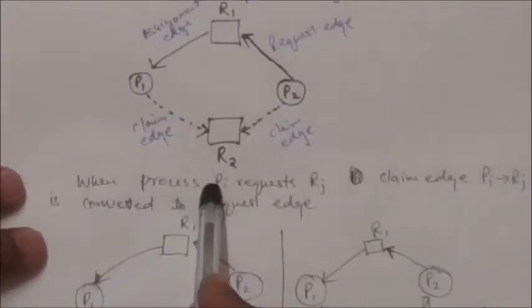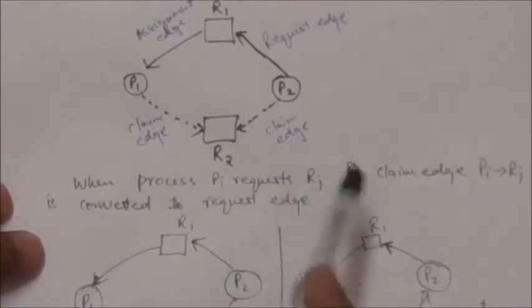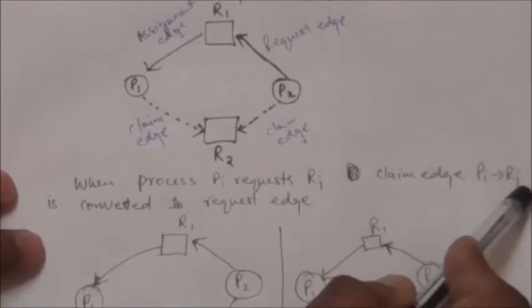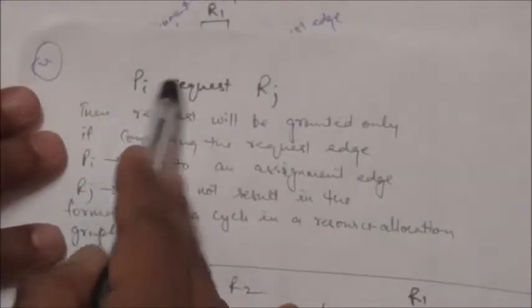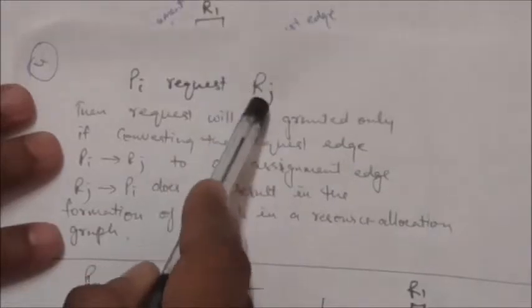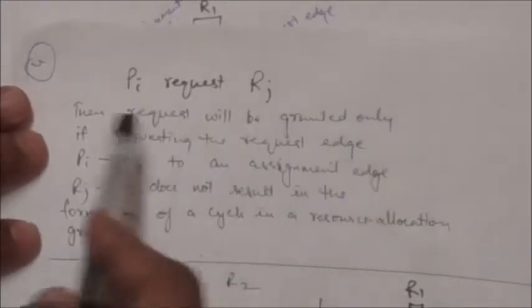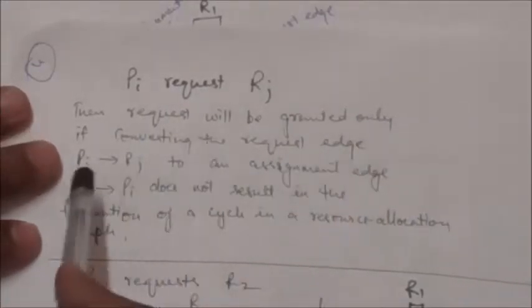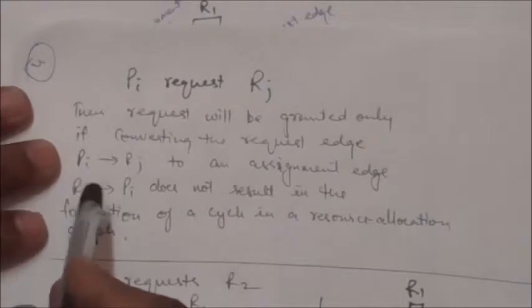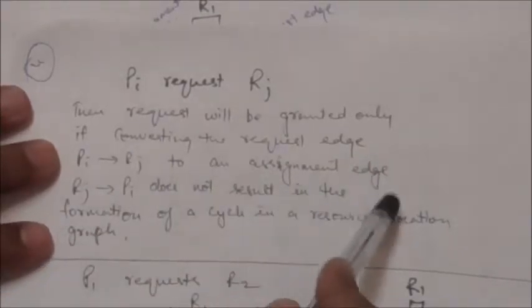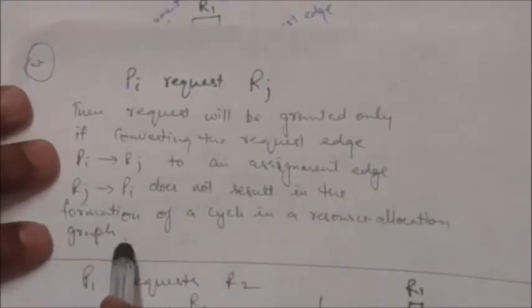When a process Pi requests resource Rj, the claim edge from Pi to Rj is converted to a request edge. In the Resource Allocation Graph algorithm, a request will be granted only if converting the request edge from process Pi to resource Rj into an assignment edge from resource Rj to process Pi does not result in the formation of a cycle in the resource allocation graph.